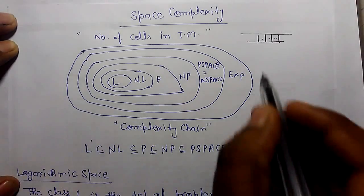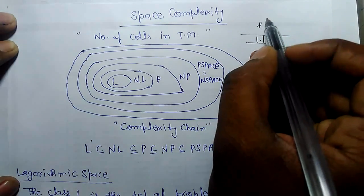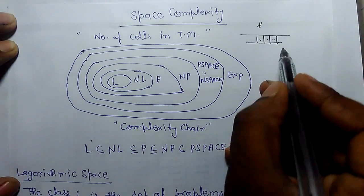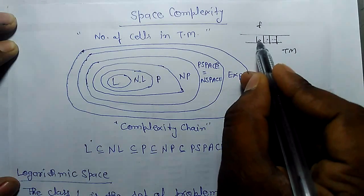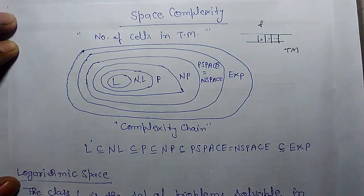If there is a function f or there is a problem or language that we have implemented in a Turing machine, the number of cells used is space complexity—how many cells are used.